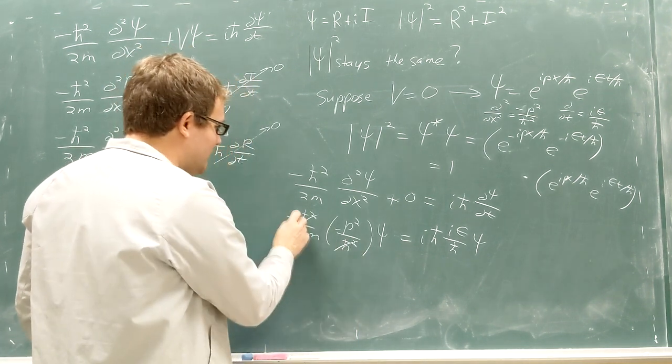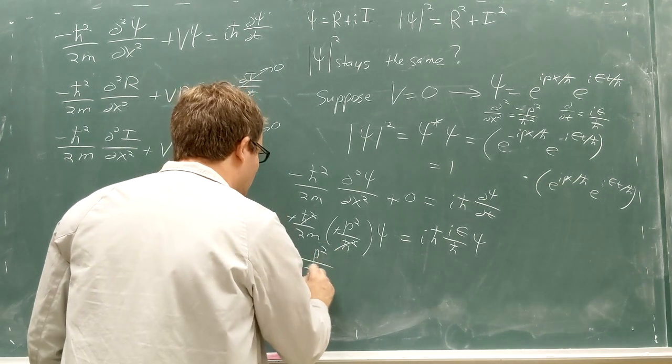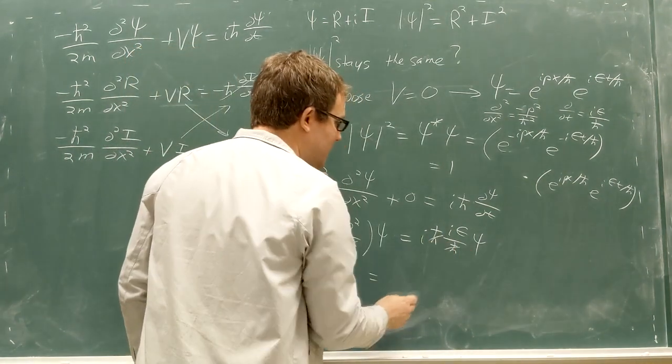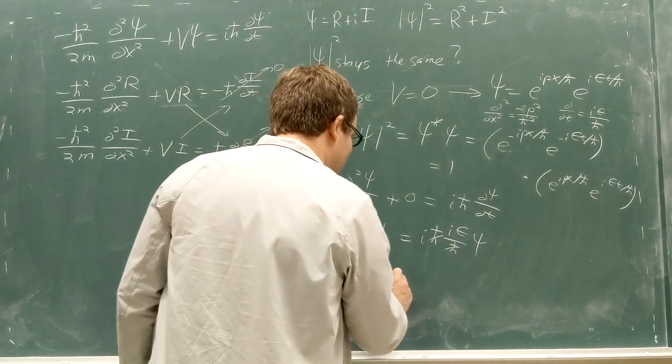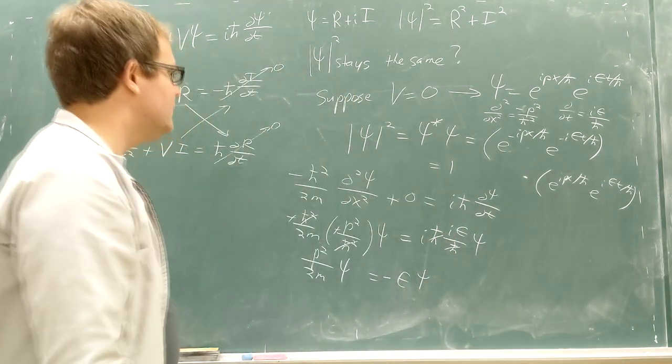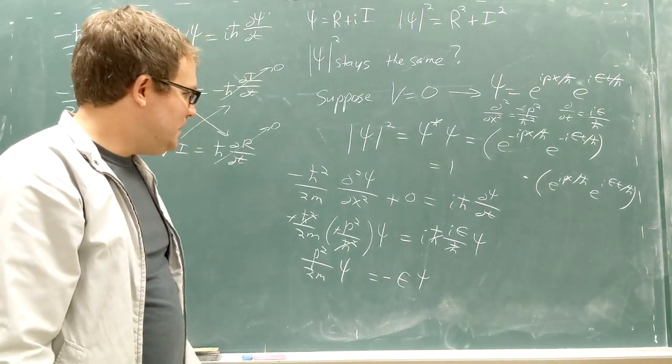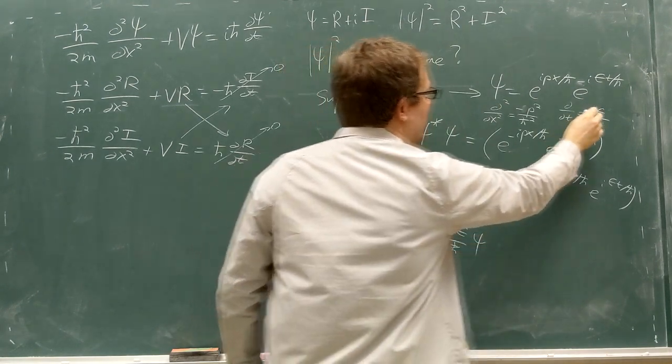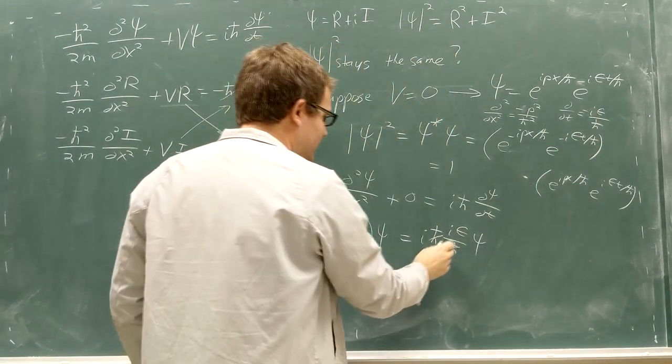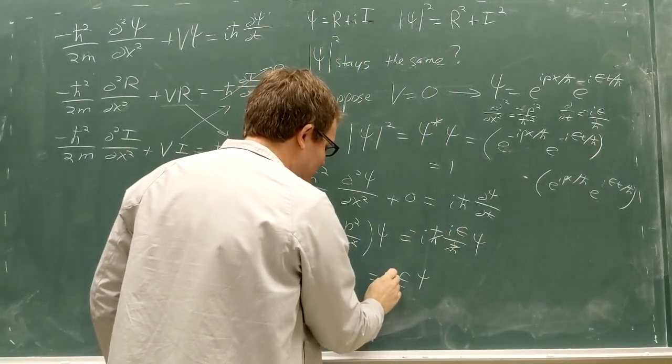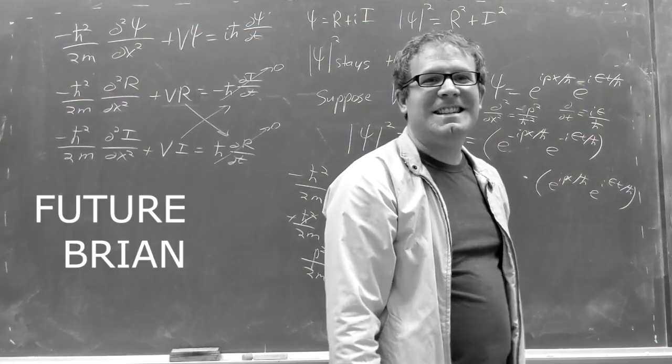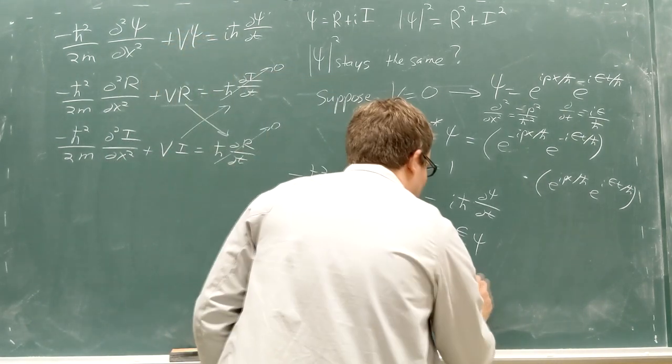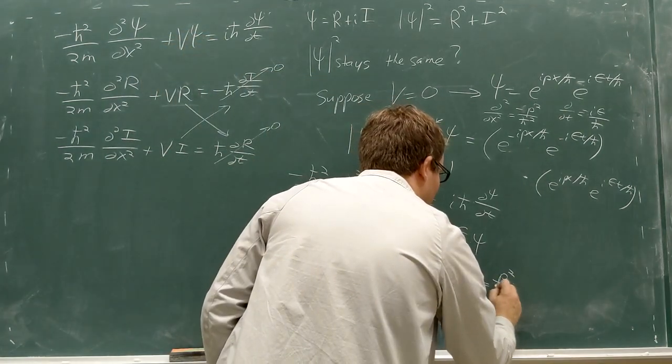My h-bars will cancel, my negatives will cancel, and I'll have a p squared over 2m psi. I'm going to equal h-bars cancel. I times i gives me a negative 1. Let's see, I'm not supposed to have a negative sign there. Oh, right, I'm supposed to put a negative sign on this thing. That'll make this a negative. That'll make this a negative. I squared, which makes that a positive. See, I told you he'd get it. So I end up with the same psi back,